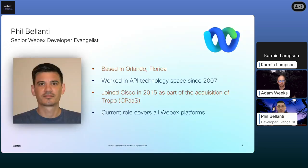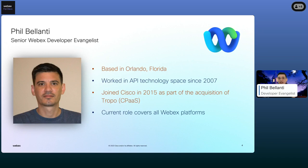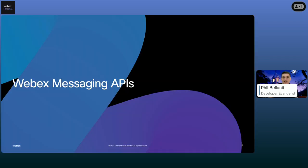Thank you, Adam. My name is Phil Belanti. I'm based in Orlando, Florida. I came into Cisco in 2015 through acquisition from a company called Tropo — we were a communication platform as a service, and one of our big competitors was Twilio. I was part of the team that helped launch the first version of the WebEx APIs, which was then called the Spark APIs. A lot of the APIs we're going to be talking about today were part of that initial launch.